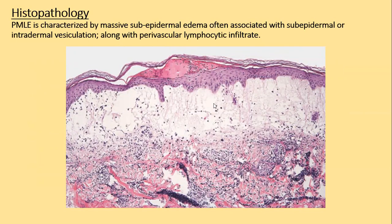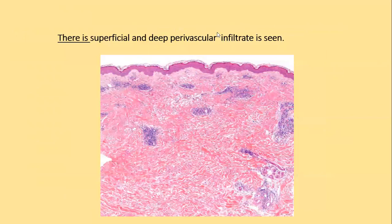Histopathology. Polymorphic light eruption is characterized by a few salient histopathological features: sub-epidermal oedema, often associated with sub-epidermal or intradermal vesiculation, along with moderate to severely intense perivascular mononuclear inflammatory infiltrate. In some cases the oedema is not visible, but perivascular lymphohistiocytic infiltrate is seen in superficial and mid-dermal blood vessels.